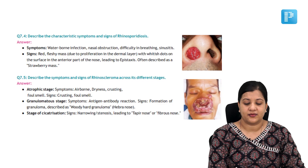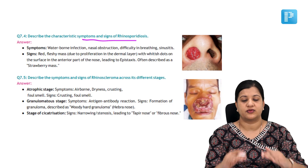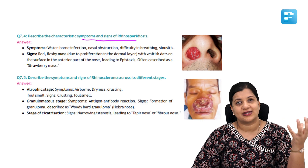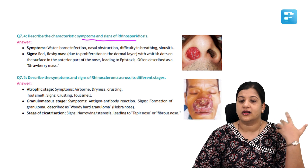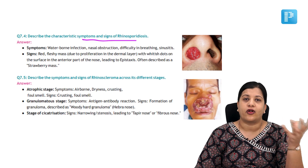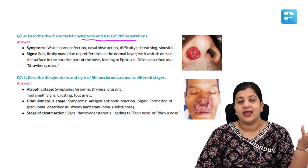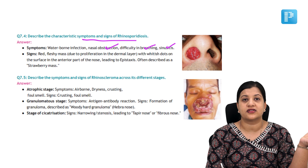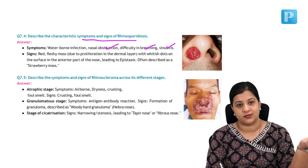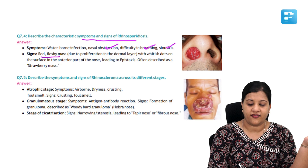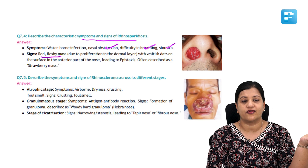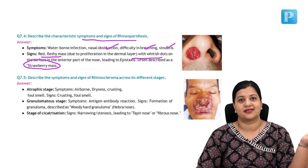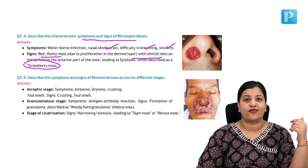What are the characteristic symptoms and signs of rhinosporidiosis? Put a paper below the question and try to recall. Because the protozoa gains entry via water onto the mucosal or skin surface, it proliferates to form a reddish vascular mass. This mass inside the nose causes nasal obstruction, difficulty in breathing, and sinusitis. Because it is vascular, it can also cause bleeding. On examination, it is a red fleshy mass seen usually in the vestibule of the nose with whitish dots on the surface — we call it a strawberry mass.